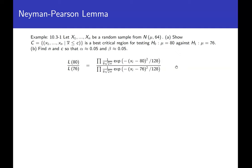The Neyman-Pearson lemma says we analyze the ratio of the likelihoods: likelihood of 80 divided by likelihood of 76. The PDF for the normal is 1 over sigma — which is 8 — times square root of 2 pi, times exp of negative (X minus mu) squared over 2 times the variance, where variance is 64 so 2 times variance is 128. The numerator uses mu equals 80 and the denominator uses mu equals 76.